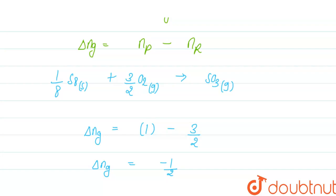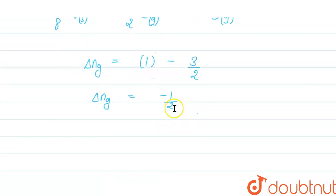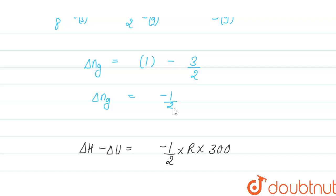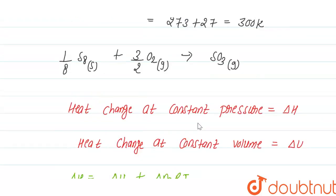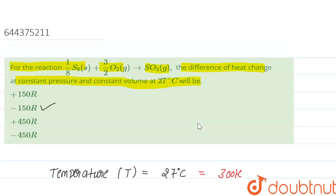Now we can calculate the difference: ΔH minus ΔU = ΔNg × R × T = (−1/2) × R × 300 = −150R. So the difference between heat change at constant pressure and constant volume is −150R. The correct option is option number 2: −150R.